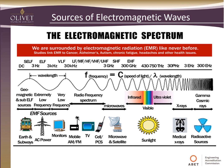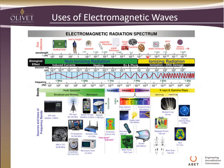Electromagnetic waves are used in everything from AC power, computer monitors, TV, cell phones, and microwave transmission to medical X-rays and radioactive sources. Visible light is a key demarcation point — everything to the left is non-ionizing, while everything to the right is ionizing, meaning it can cause DNA damage, which is why we must be careful with X-rays and CT scans.